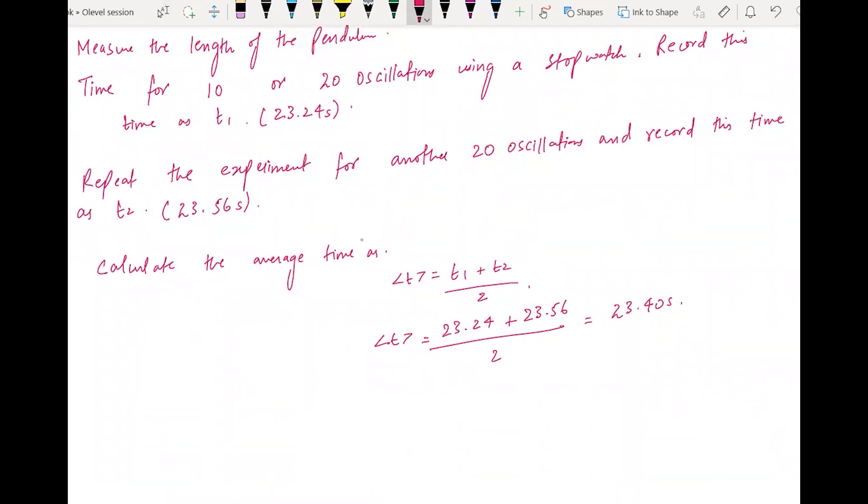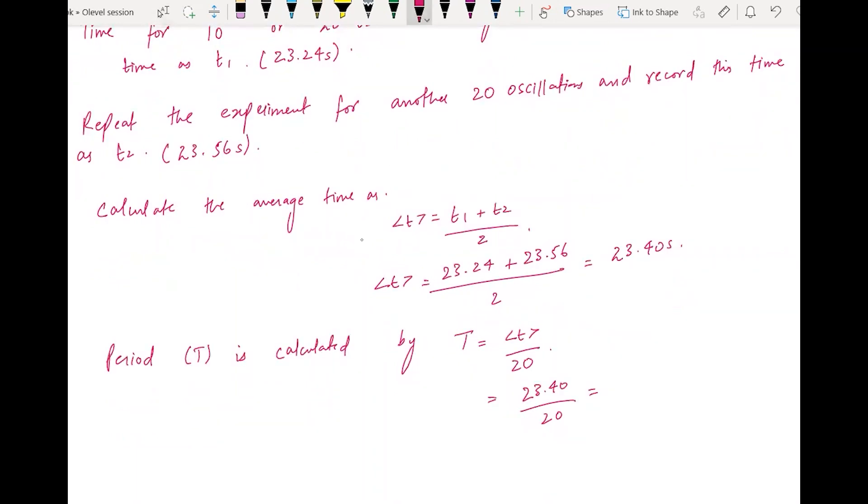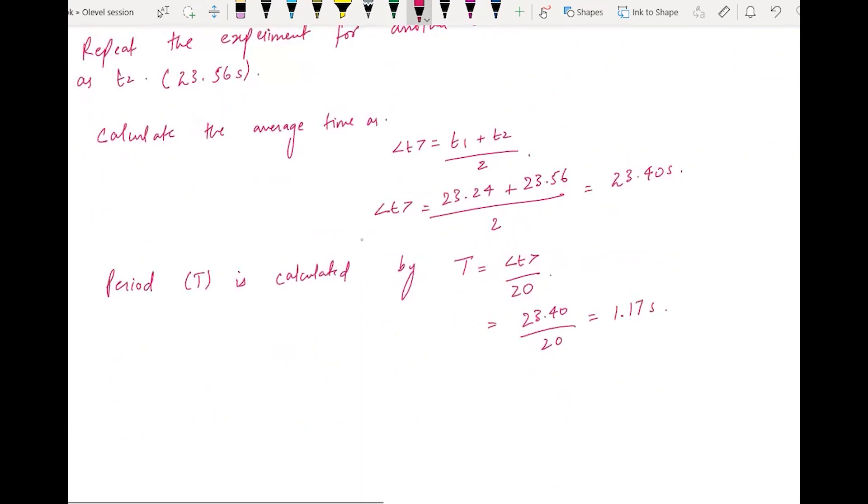What you will do is create the average time as T1 plus T2 over two. The period is calculated by the formula: T equals this average over 20, or whatever the number of oscillations are, divided by 20, and you get the answer - 1.17 seconds. So we can write that capital T is time for n oscillations over number of oscillations.